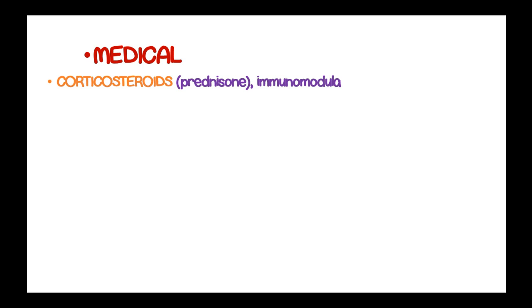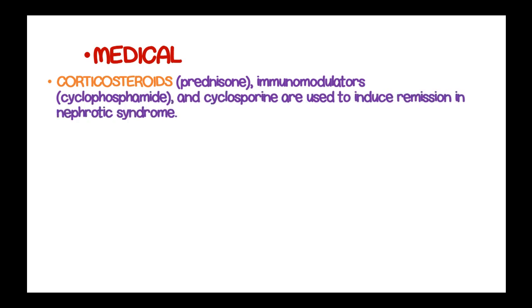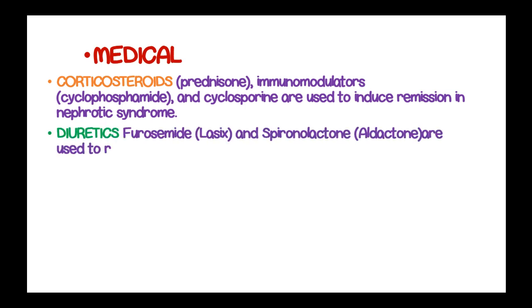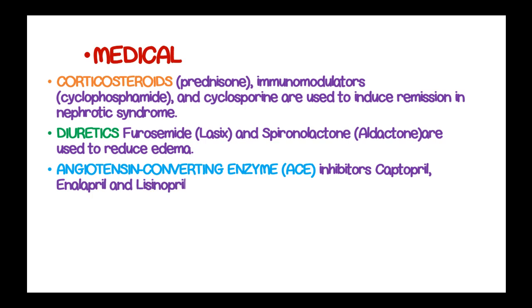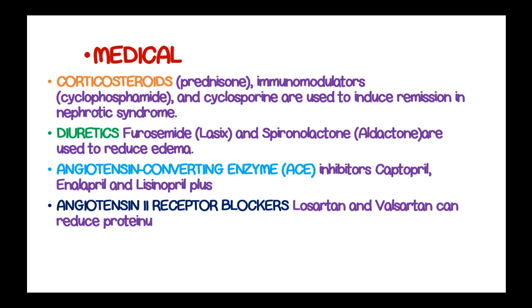Medications include corticosteroids such as prednisone, and immunomodulators such as cyclophosphamide and cyclosporine, used to induce remission of nephrotic syndrome. Diuretics such as furosemide and spironolactone, a potassium-sparing diuretic, are used to relieve edema. ACE inhibitors such as captopril, enalapril, and lisinopril, plus angiotensin-2 receptor blockers such as losartan and valsartan, can be used to reduce proteinuria.